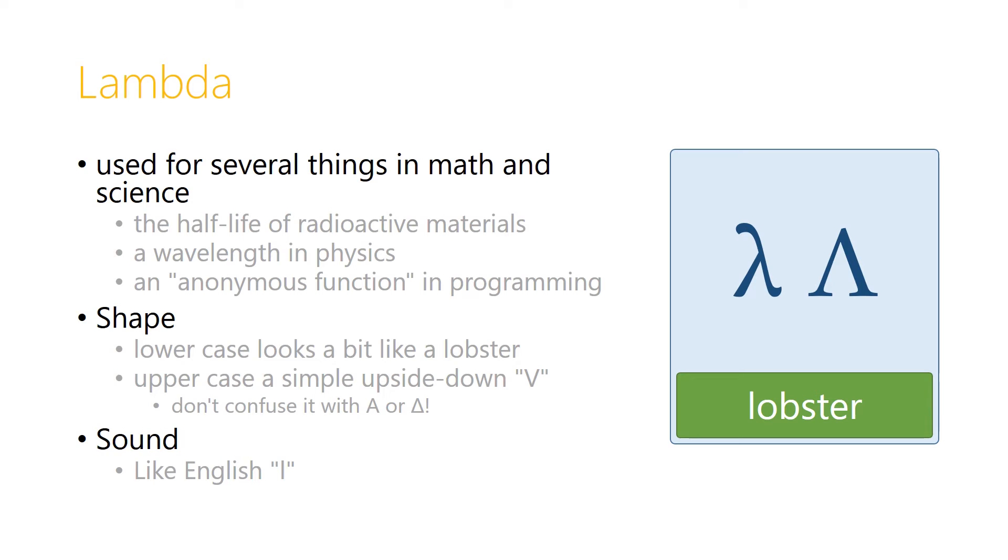The shape looks in the lowercase a little bit like an upside down lobster. If you have the tail sticking up in the air, and two arms with claws sticking down, and that might help you remember that this letter lambda, even though it doesn't look much like an L, makes the L sound.